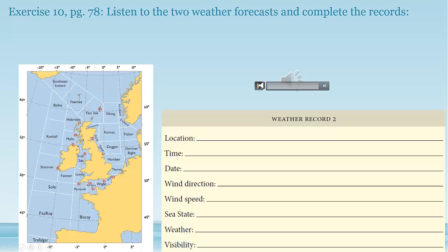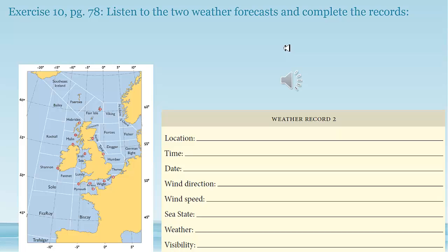That was the first time, here is the second time. Synopsis at 0800 on the 23rd of March, Cromarty. Variable 3 or 4, becoming south, 5 to 7, slight or moderate, occasionally rough, fair, good. And one last time. Synopsis at 0800 on the 23rd of March, Cromarty. Variable 3 or 4, becoming south, 5 to 7, slight or moderate, occasionally rough, fair, good.